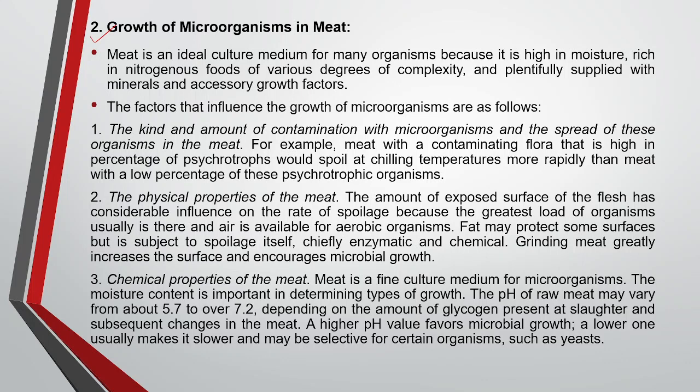The physical properties of meat also matter. A greater amount of exposed flesh area results in a greater load of organisms. Fat present on the surface also undergoes enzymatic and chemical activity. If the meat is ground, it increases the surface area and encourages microbial growth. The chemical properties of the meat — including moisture content and pH — affect the growth of microbes; organisms will attack and grow based on the pH conditions that favor them.